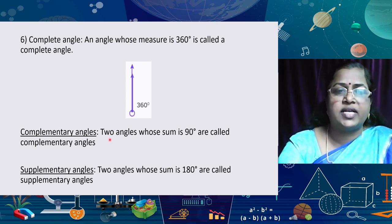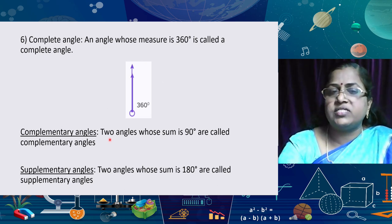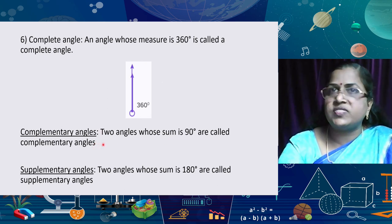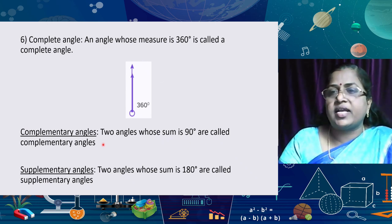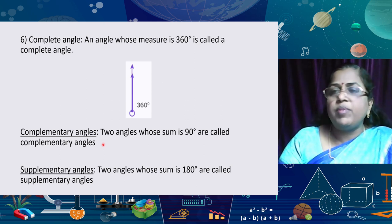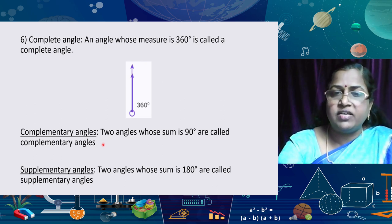We can study some more types of angles. First, complementary angles: any two angles whose sum is 90 degrees are called complementary angles. For example, 60 and 30 — 60 plus 30 is 90, so both are complementary angles. The complement of 60 is 30, found by 90 minus 60 equals 30, and the complement of 30 is 60, found by 90 minus 30 equals 60.